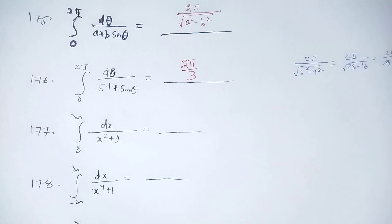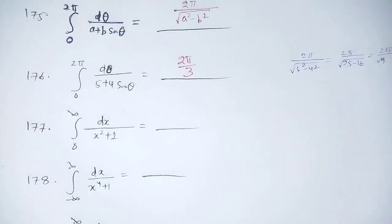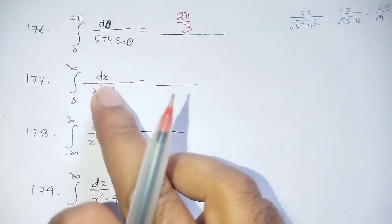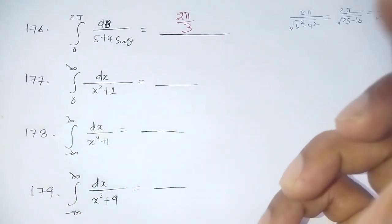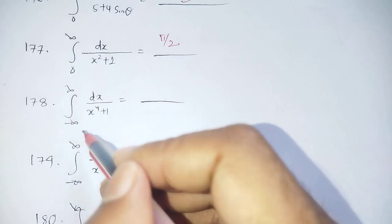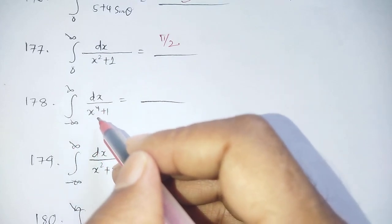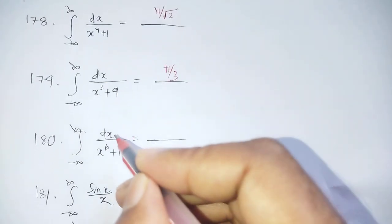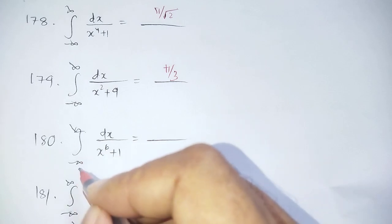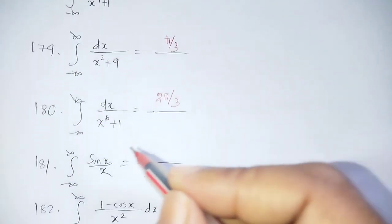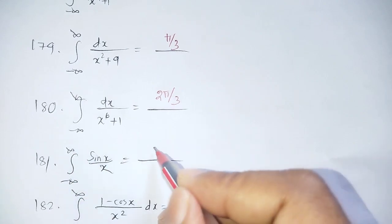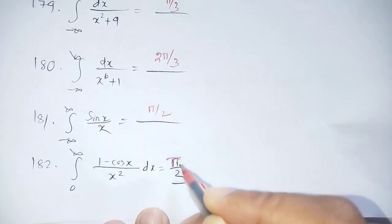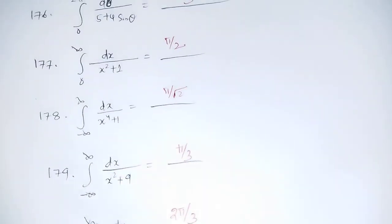Standard integral values to remember: ∫₀^∞ dx/(x² + 1) = π/2. ∫₋∞^+∞ dx/(x⁴ + 1) = π/√2. ∫₋∞^+∞ dx/(x² + 9) = π/3. ∫₋∞^+∞ dx/(x⁶ + 1) = 2π/3. Also, ∫₋∞^+∞ (sin x)/x dx = π, and ∫₀^∞ (1 − cos x)/x² dx = π/2.